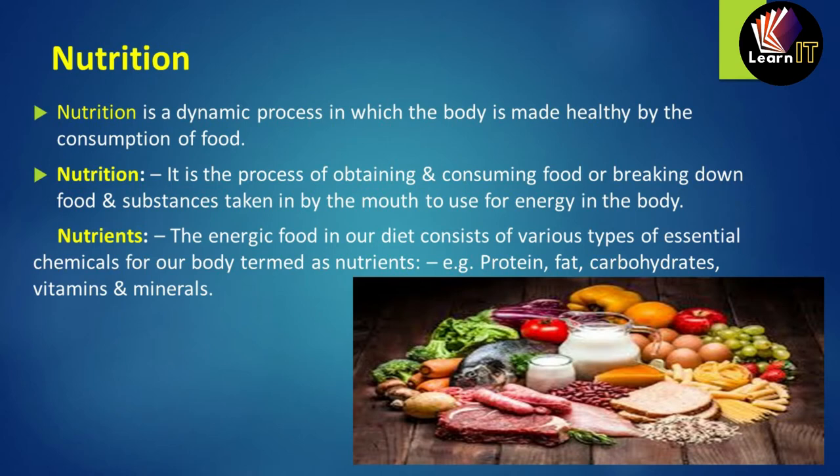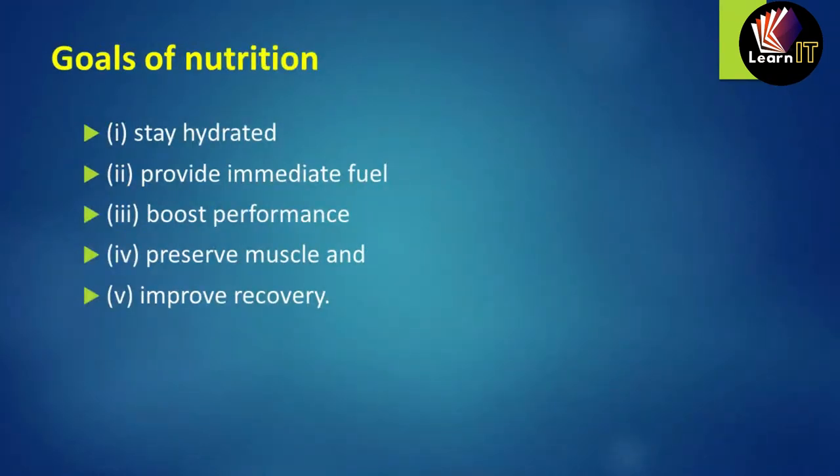Nutrition has some components. The first is known as nutrients. A nutrient is the energy-providing food in our diet which consists of many different kinds of essential chemicals for our body's growth — for example proteins, fats, carbohydrates, vitamins, and minerals — which give us nutrition.